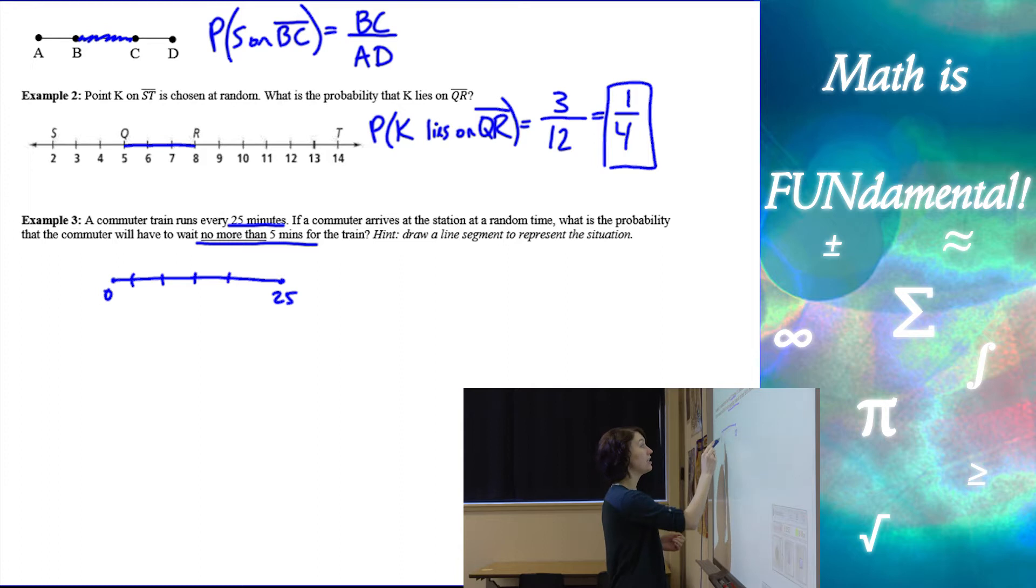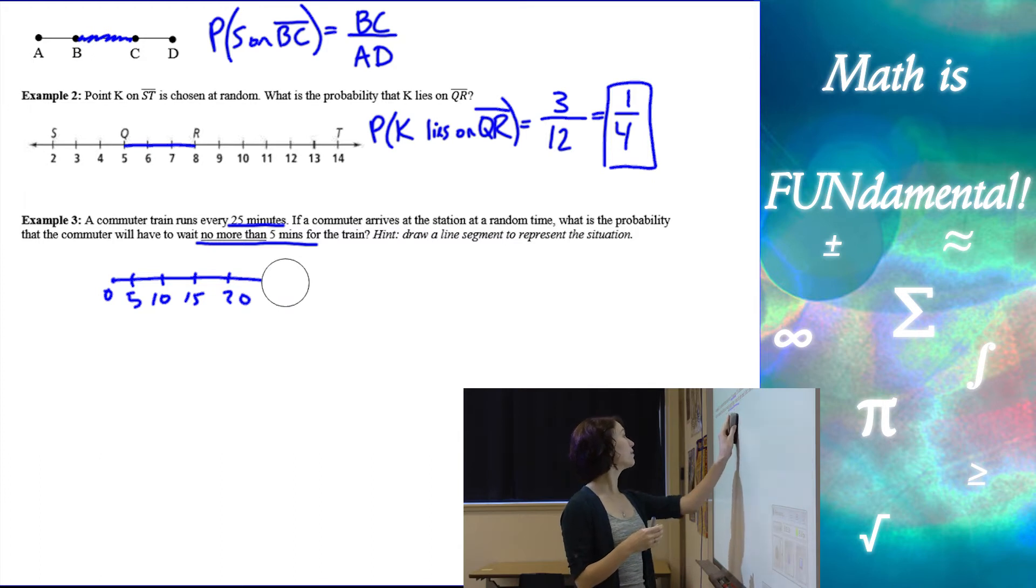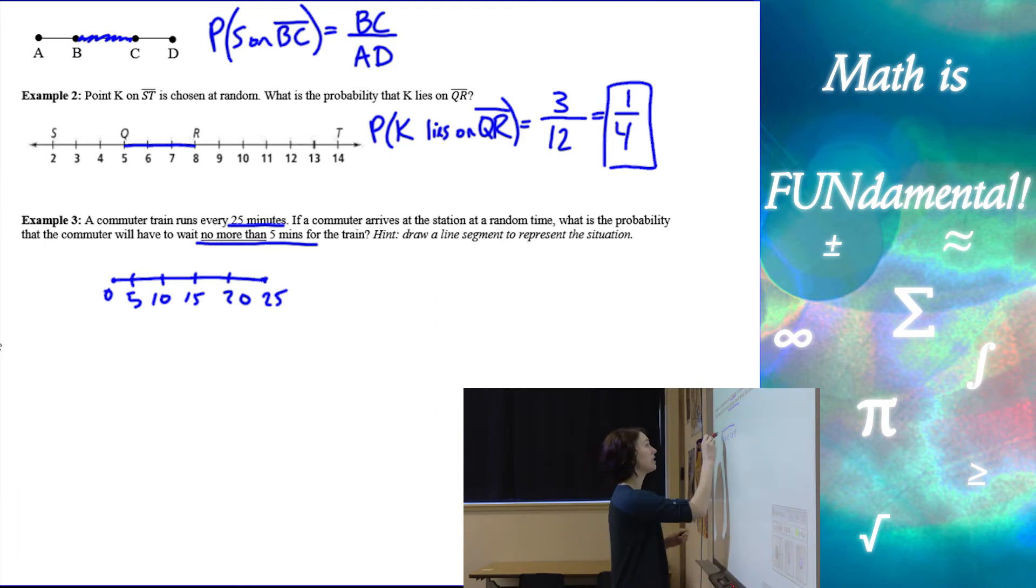Here's 0 minutes and here's the train showing up at 25. We can break this into 5, 10, 15, and 20. So equal pieces here or almost equal. Let's make that equal there. Alright. And we want to know what's the probability that if I get to the station I'm only going to wait in this section between 0 and 5.